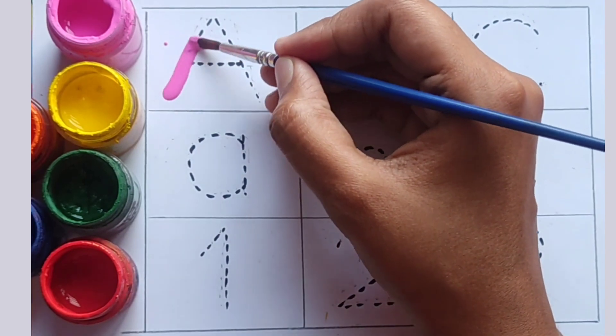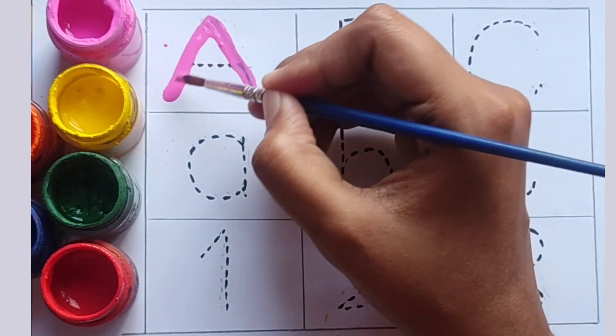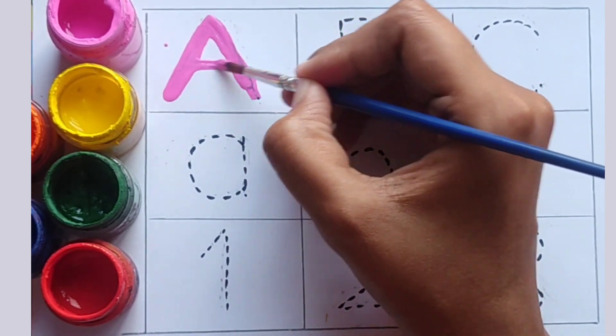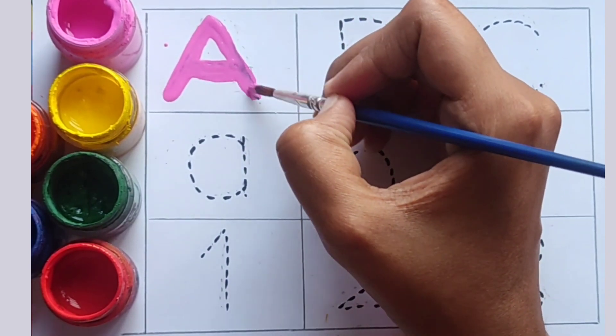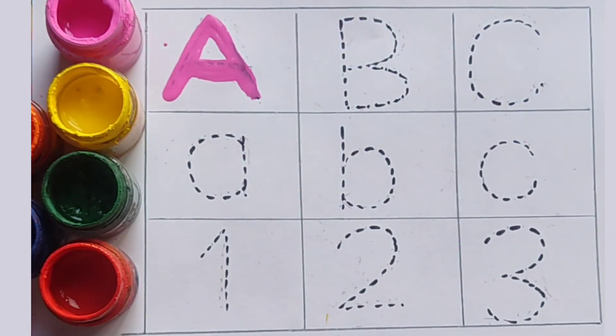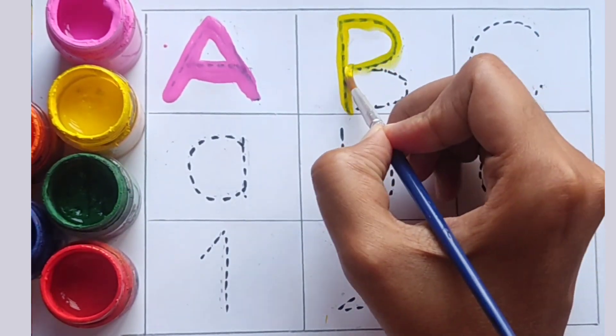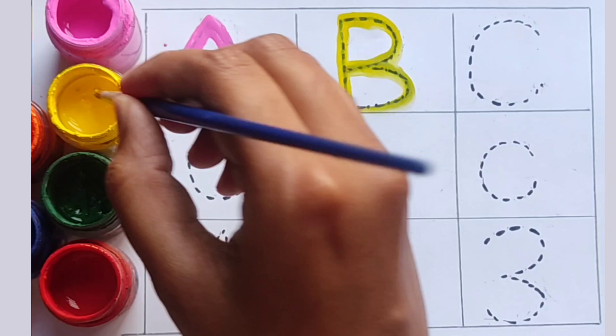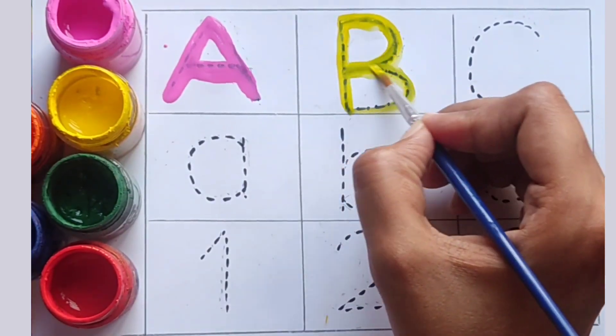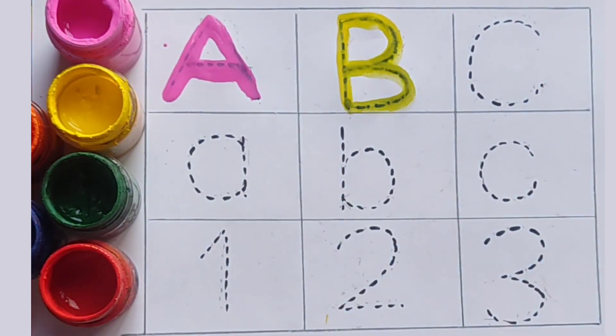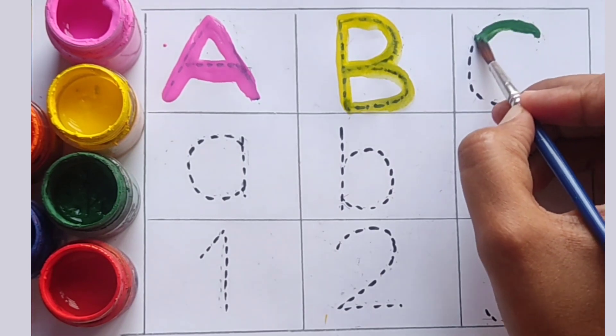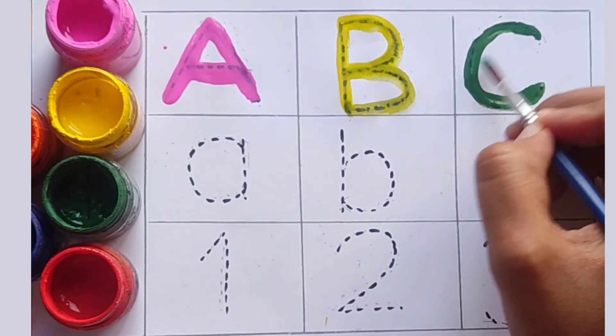This is capital letter A. What is it, kids? A. Capital letter B. B. Capital letter C. C.